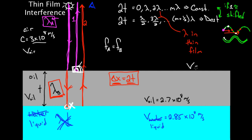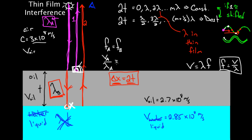The speed of a wave equals wavelength times frequency, so frequency equals the speed of the wave over the wavelength. The frequency in material A is just the speed of light in A over the wavelength in A. The frequency of the light in B, which is our oil, would be the speed of light in region B divided by the wavelength in region B. Setting these equal and solving, the wavelength in the thin film equals the speed of light in B divided by the speed of light in A, times the wavelength in A.